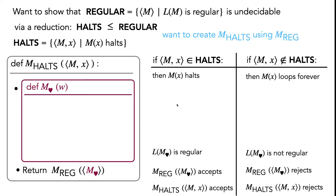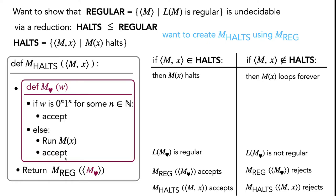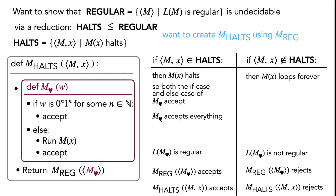In our definition of mHeart, the first thing we do is check the input string w. If w is of the form 0^n 1^n for some n in the natural numbers, we immediately accept. Otherwise, we run m on x and then accept. In the case that mx halts, both the if-case and the else-case of mHeart will accept, meaning mHeart accepts everything. The language of mHeart is Σ*, which is a regular language, so this proof checks out.